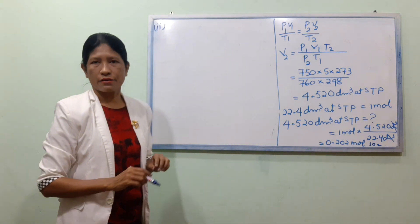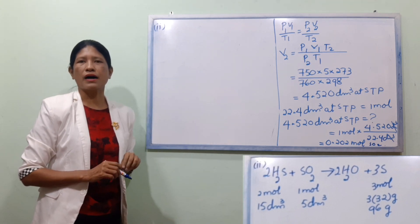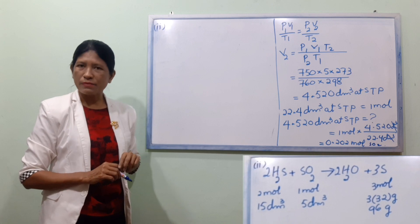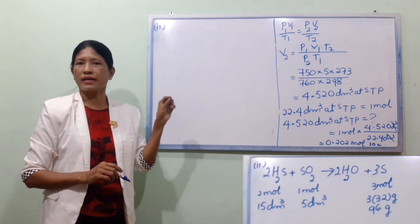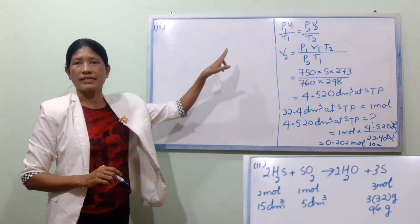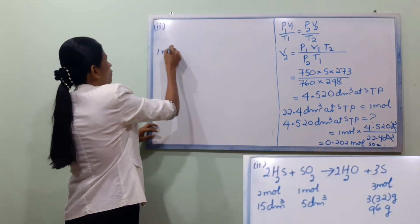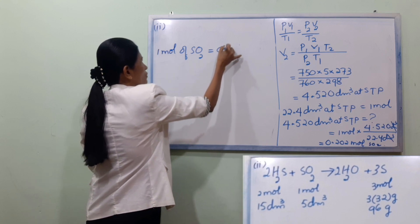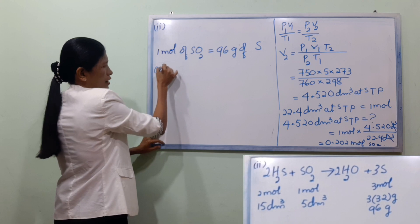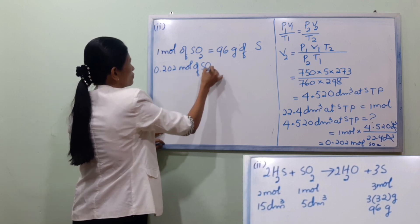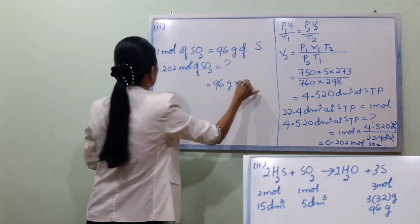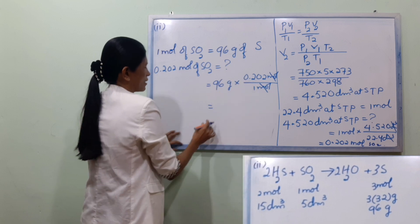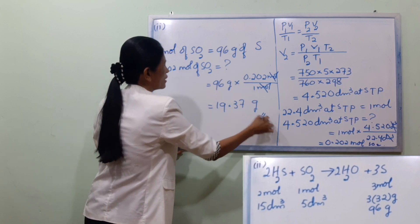When you can see 1 mole of SO2, you will see that 3 moles of SO2 gives 3 moles of S. So 3 moles of S is our answer. If you want to take the grams down here, it will be 96 grams of S. With 0.202 moles of SO2, it will be 96 grams times 0.202 moles, giving 95.37 grams of SO2.